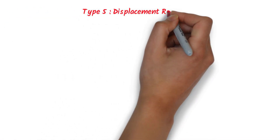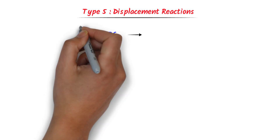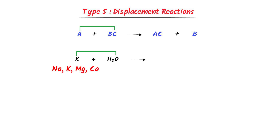The fifth type is displacement reactions. In such reactions, consider reactants A plus BC — reactant A will displace or kick out B, and we get AC plus B. For example, consider potassium plus water. When an element like potassium, sodium, magnesium, or calcium reacts with water, it always displaces hydrogen gas. We get potassium hydroxide, sodium hydroxide, magnesium hydroxide, or calcium hydroxide, etc.